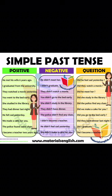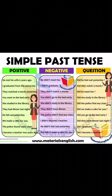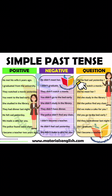Examples of simple past tense. For positive: he met his wife six years ago. I graduated from the university. They watched a movie yesterday. For negative: he didn't meet her. I didn't graduate. They didn't watch a movie. You went to bed early. She studied in the library. They had dinner last night. For negative: you didn't go to bed early. She didn't study in the library. They didn't have dinner.